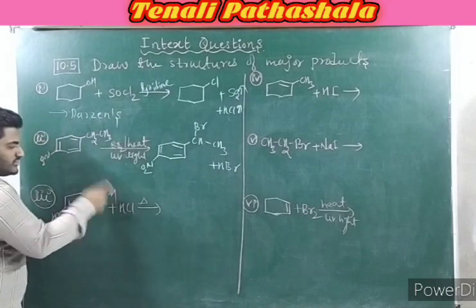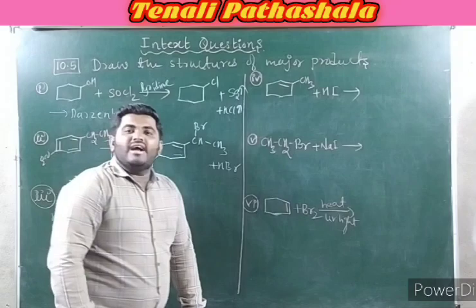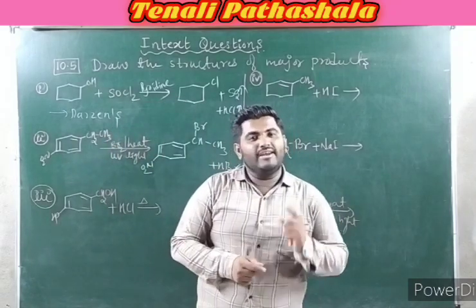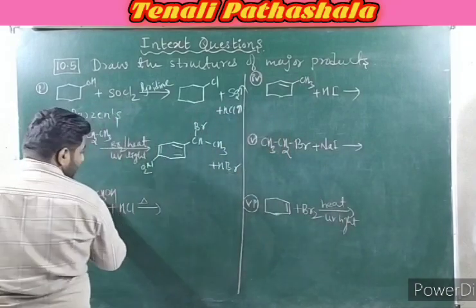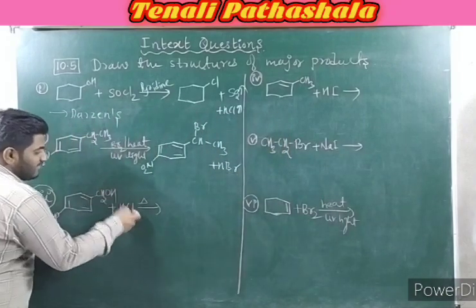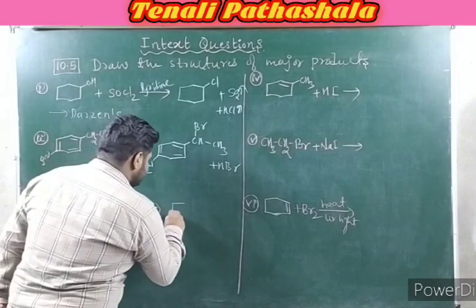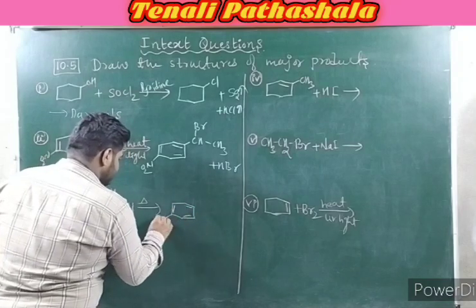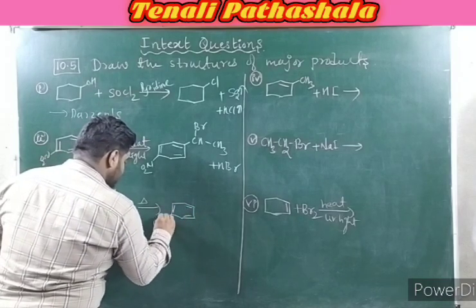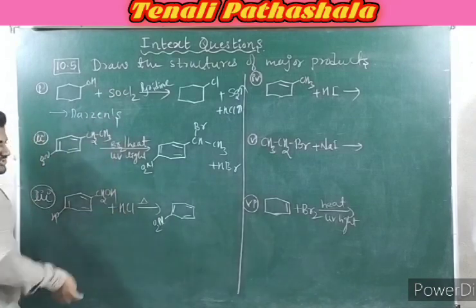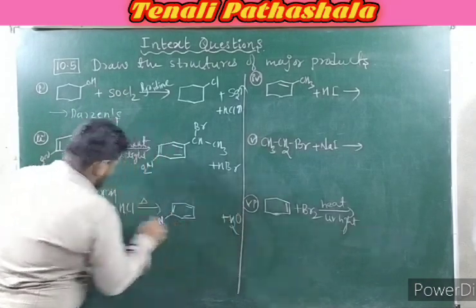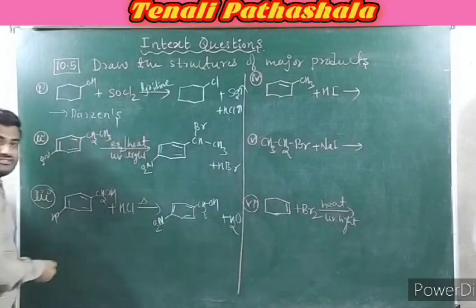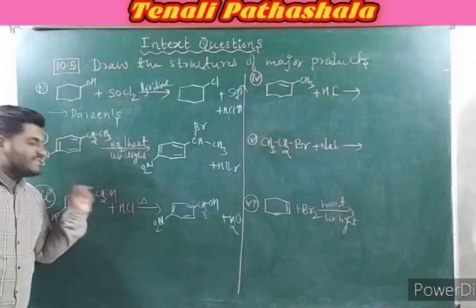Third question: CH₂OH with HCl — addition of hydrogen halide to a primary alcohol. Obviously OH is replaced by Cl: H and OH are eliminated as H₂O, and Cl sits in place of OH. In CH₂OH, OH is directly replaced by Cl.